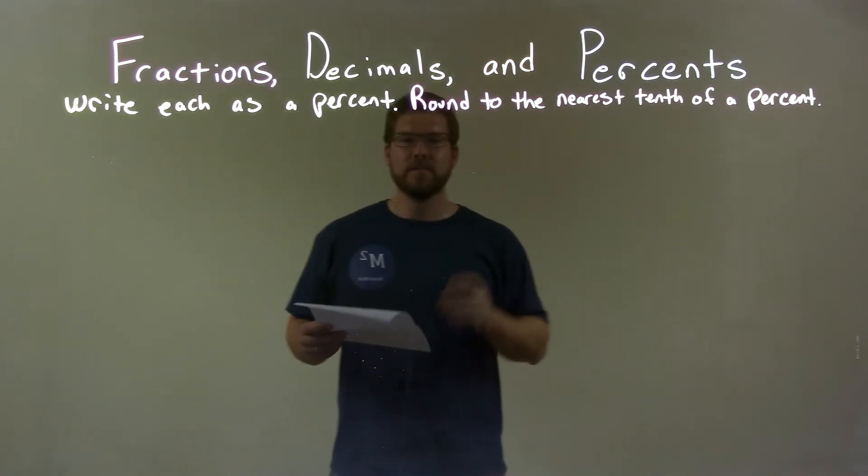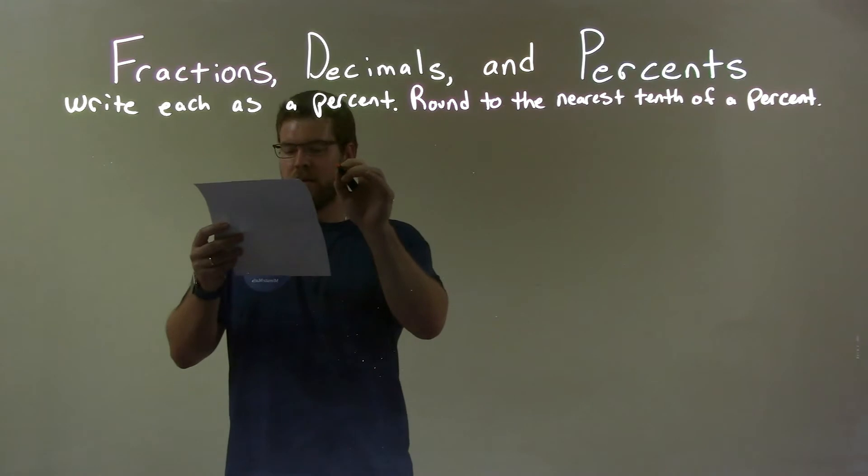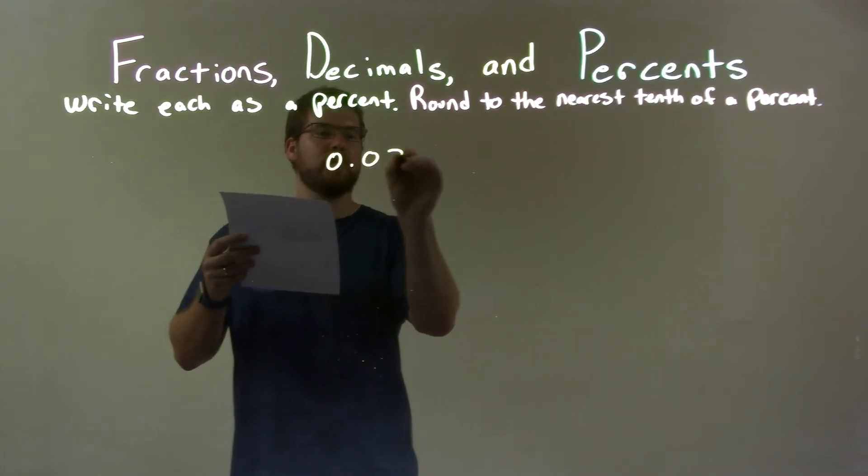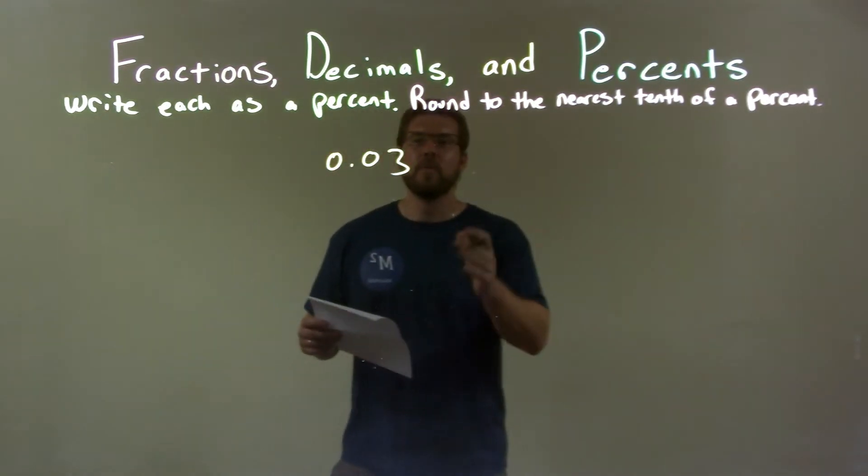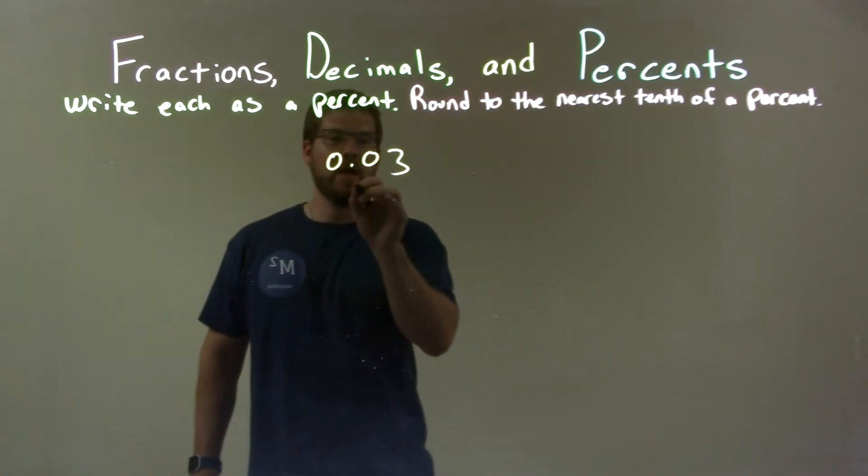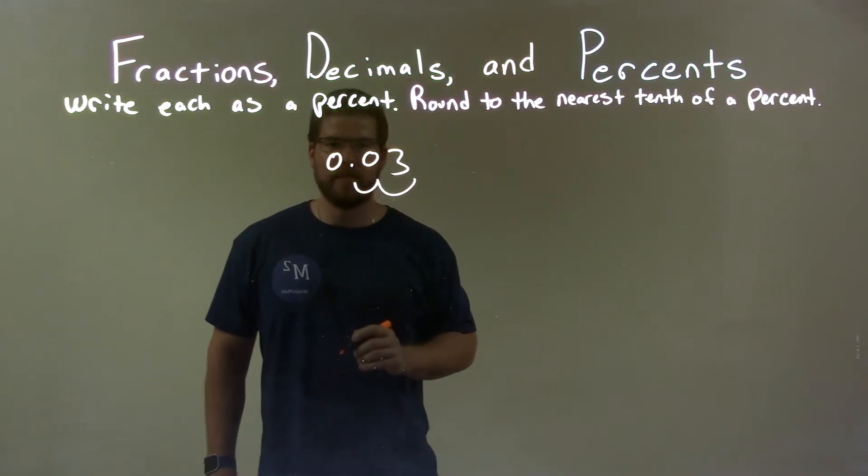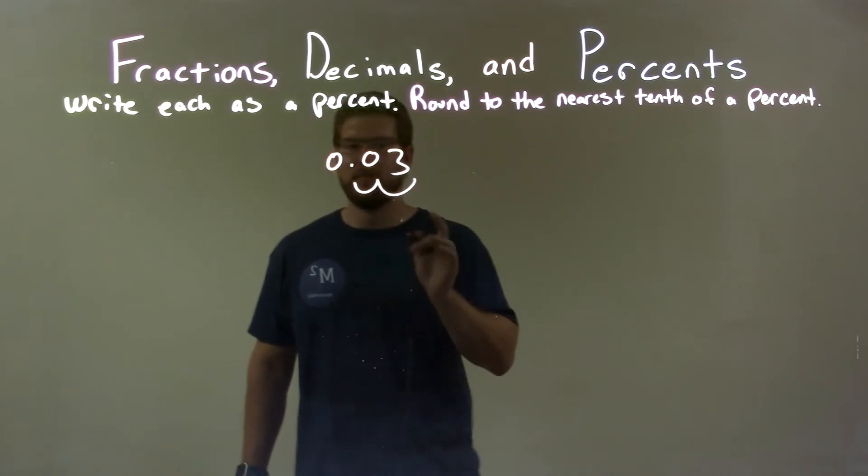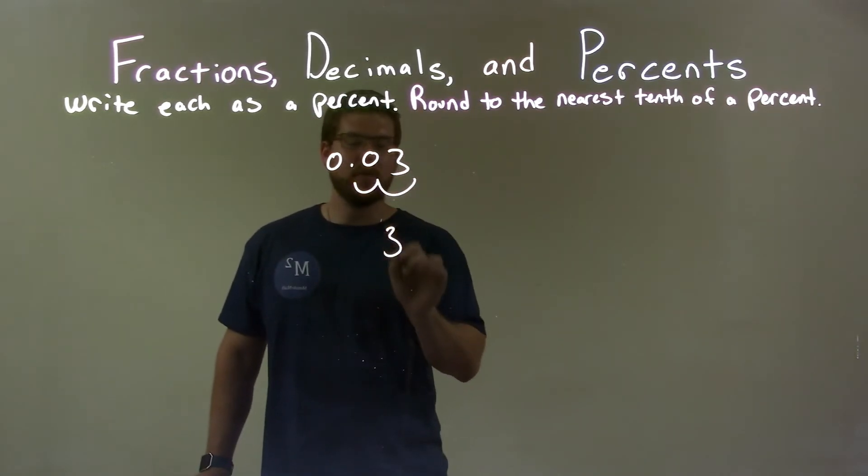So if I was given this decimal 0.03, well, if I want to write that as a percent, I take the decimal and move two spots to the right. Two spots to the right gives me just a 3.